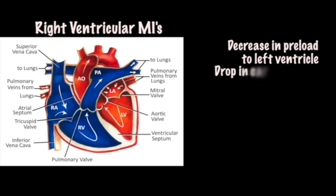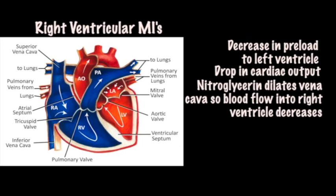This causes a drop in cardiac output. If these patients are now given nitroglycerin, the superior vena cava and inferior vena cava will dilate, so blood flow into the right ventricle will decrease. Output from the right ventricle decreases even more, preload to the left ventricle decreases even more, and cardiac output will plummet. So blood pressure drops significantly. This is what happened to our patient.